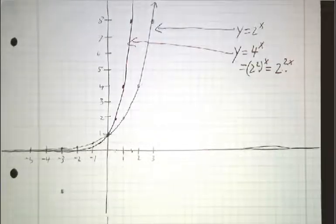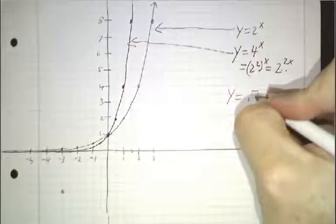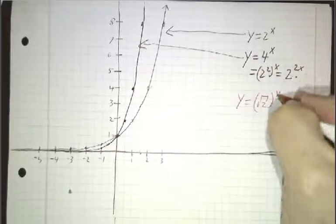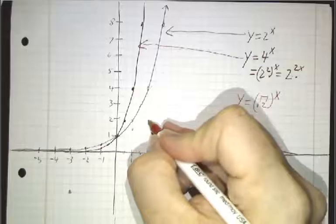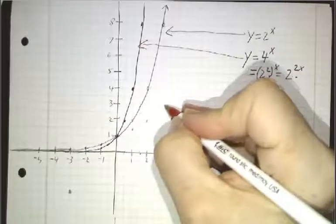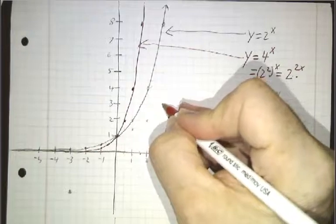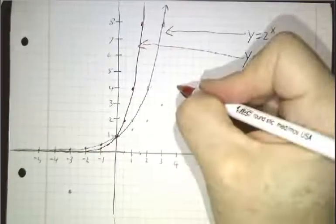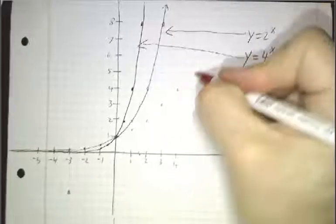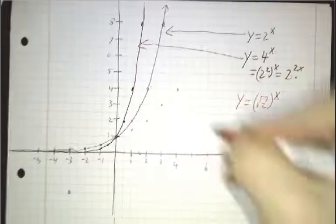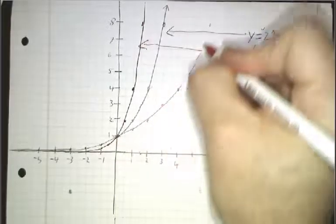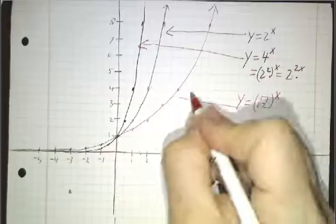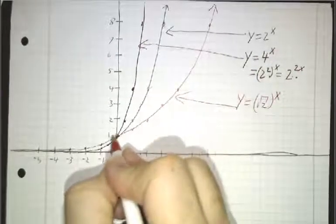We could also look at the function y equals the square root of 2 to the x. If we look at that function, then that will wind up going more slowly. f of 1 will be root 2, f of 2 will be 2, f of 3 will be twice root 2, f of 4 will be 4, f of 6 will be 8. That's the same curve all over again, only slower, and likewise, it's slower at the other end as well.